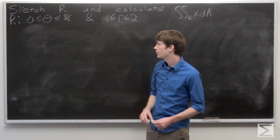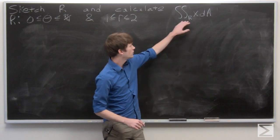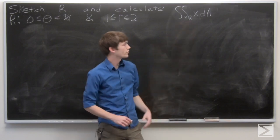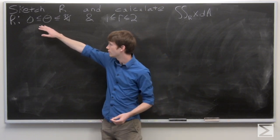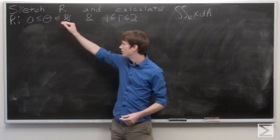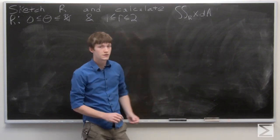In this problem, we're asked to sketch our region R and then calculate the double integral of x over our region R. Our region R is defined where theta is between 0 and pi over 4 and R is between 1 and 2.